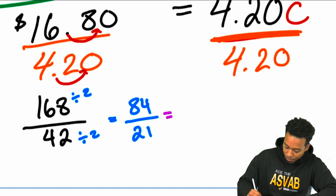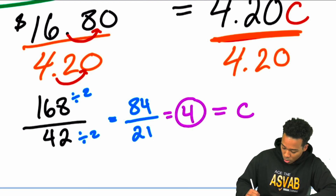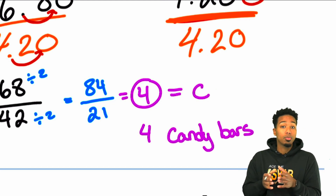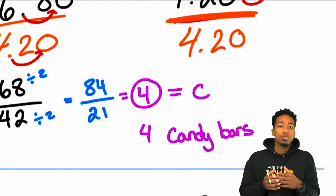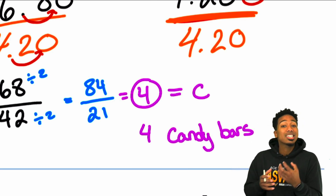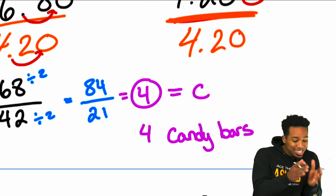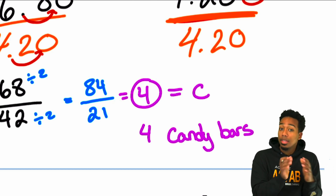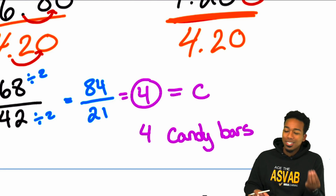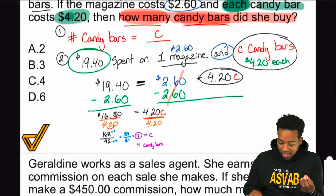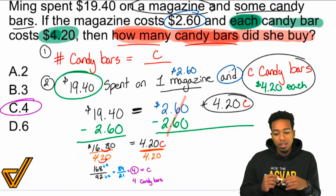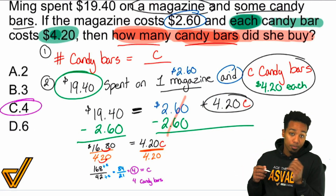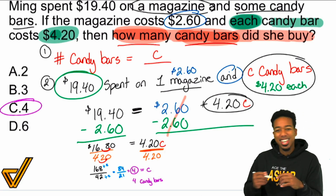So there we have it — four candy bars. If you're having trouble seeing that, I really do encourage you to work on your mental math. This is way too important because if you're not sure how to calculate with basic arithmetic, it makes it a lot harder to plan word problems — it takes longer to calculate, leaving less time to plan. Do the little things right and the big thing takes care of itself. Answer choice C is the answer. I'll see you in class tonight — let's keep getting smarter every day and ace the ASVAB.